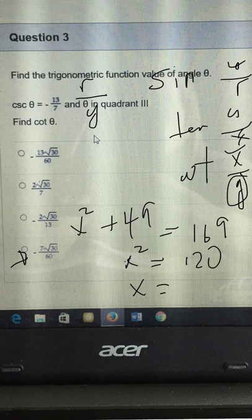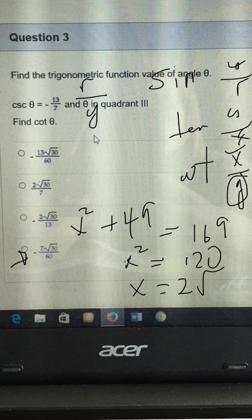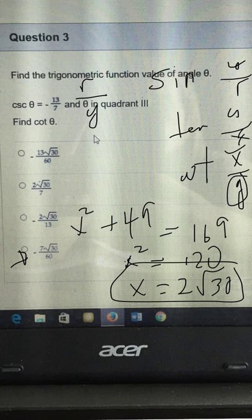Then x is the square root of 120, which I think is... 4 goes into that 30 times, so it'd be 2 root 30. So x is 2 root 30. Now cotangent, I need to get x over y.